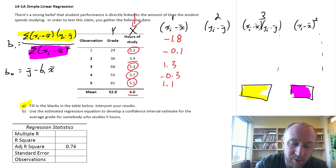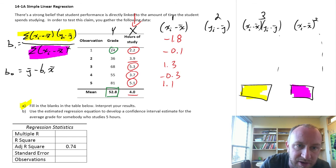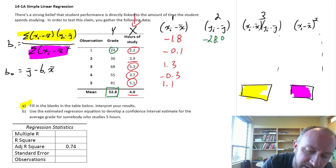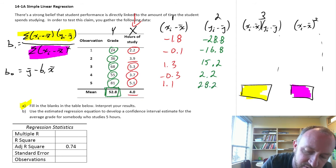So there are all of the differences between my observed independent values and the mean x-bar. Then we do the same thing for y. So now I'll go through each of these values. So this first one is 24 minus 52.8, so this is minus 28.8. The next 36 minus 52.8 is minus 16.8. And then 68, so that's 15.2. 55, always that same mean, 2.2. And 81 minus 52.8 is 28.2.